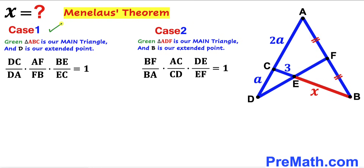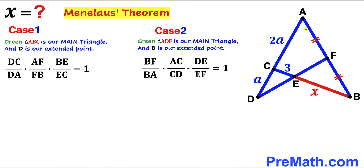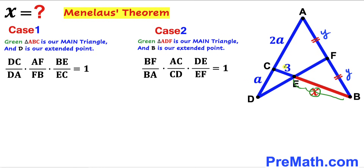For both cases, when we complete the flowchart and multiply all ratios, the result must equal 1. Now let's make an observation: segment AF equals segment FB, so if I label AF as lowercase y, then FB is also y. We know AC is 2a, CD is a, EB is x, and CE is 3. However, the ratio of segment lengths DE and EF are unknown.